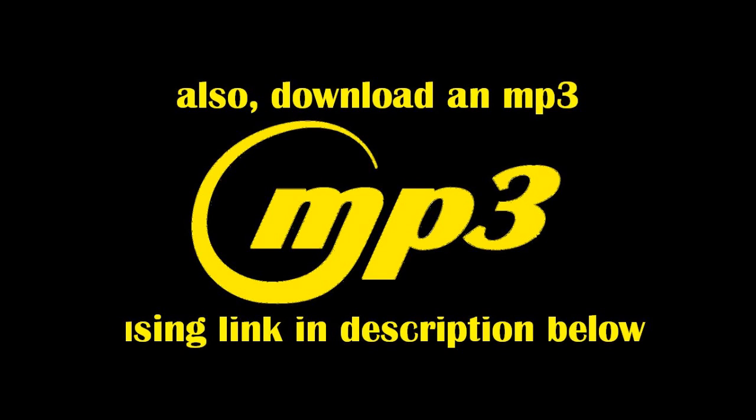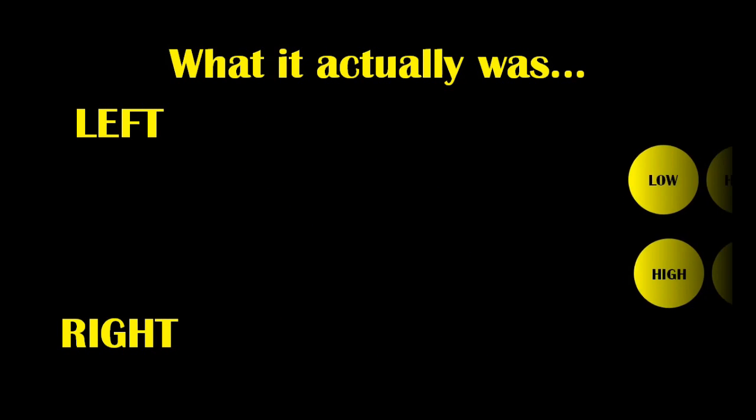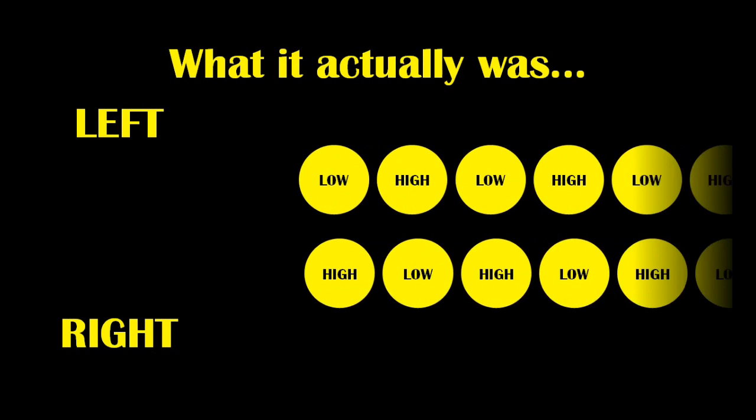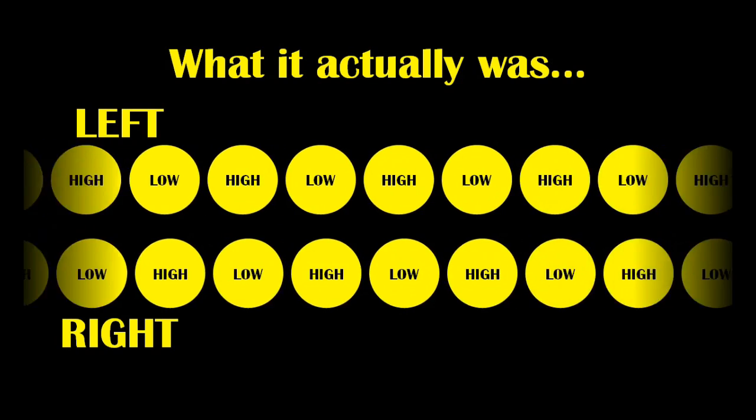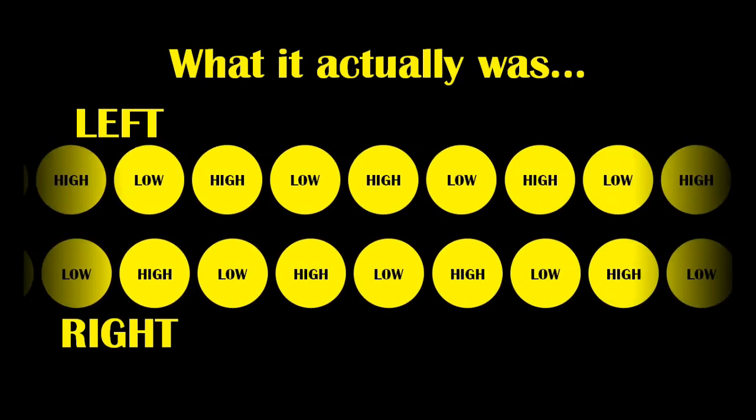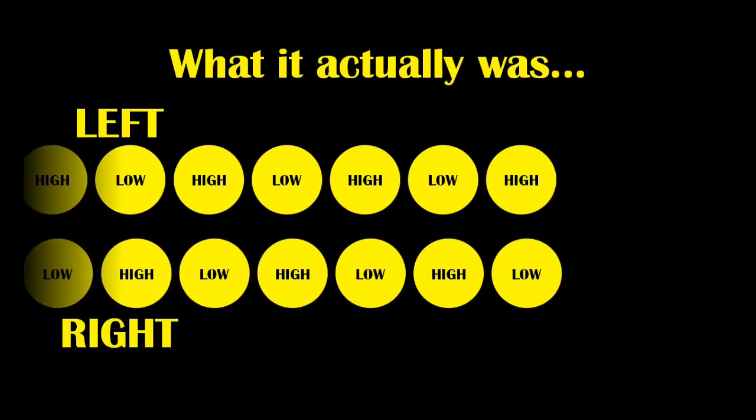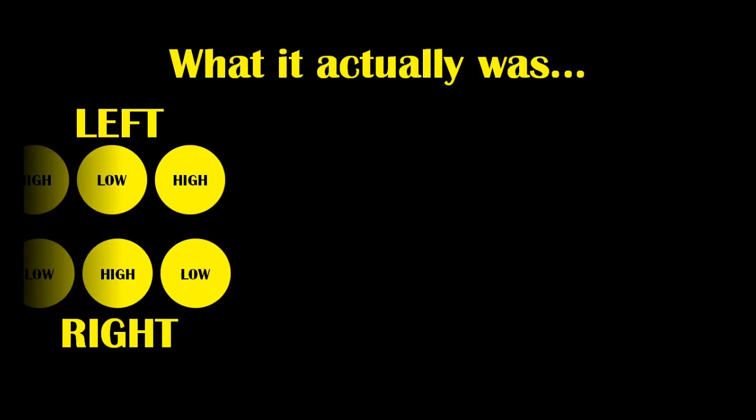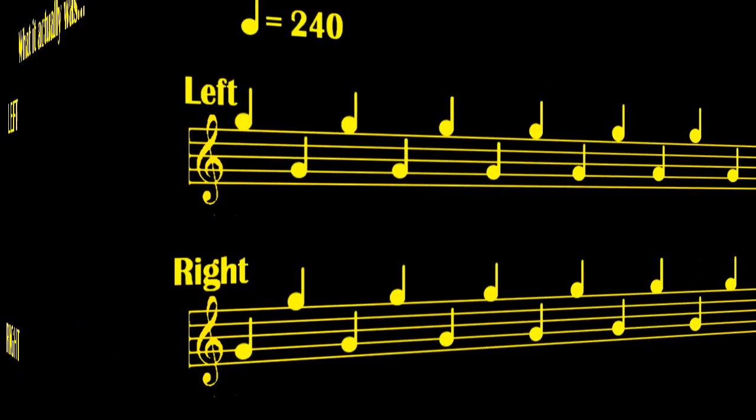So, what was it you were actually listening to? Well, in the left ear, you were hearing a low tone, and then a high tone, and a low tone, and a high tone. And in the right ear, at the same time, you were hearing a high tone, then a low tone, then a high tone, then a low tone. Written on a musical stave, it would look like this.